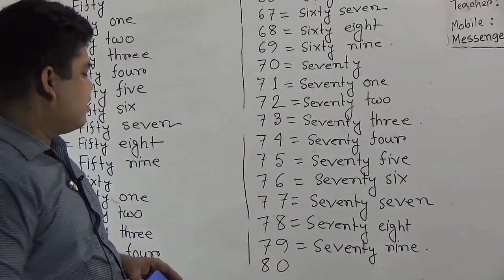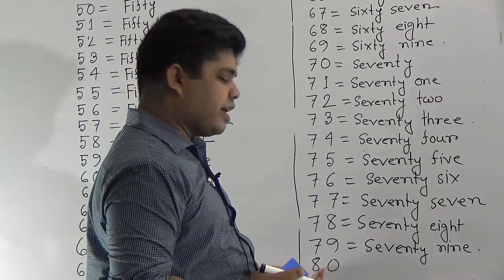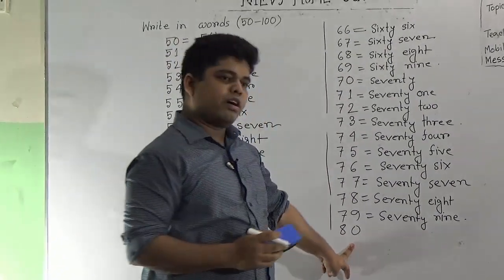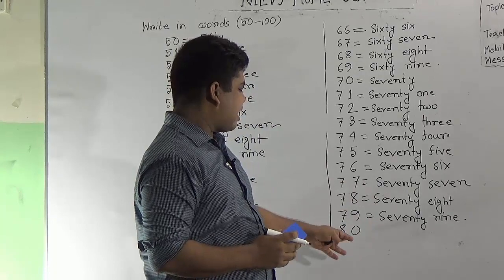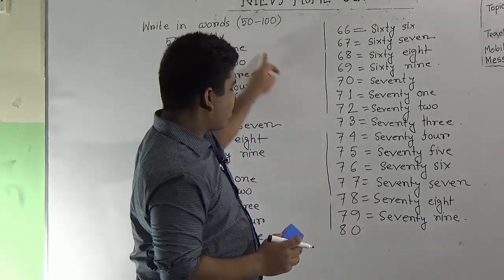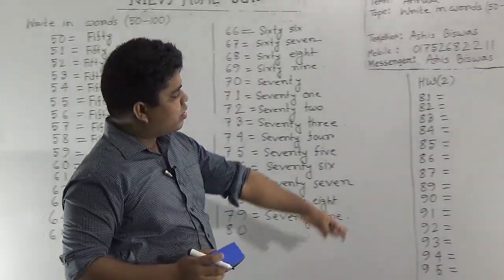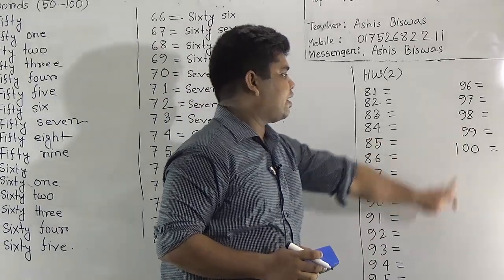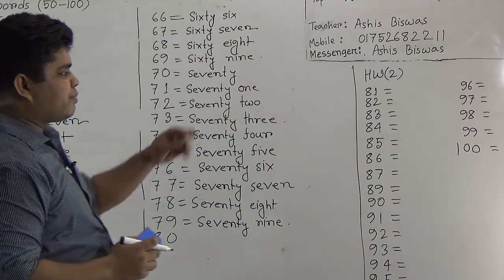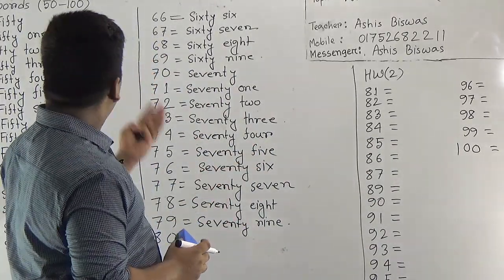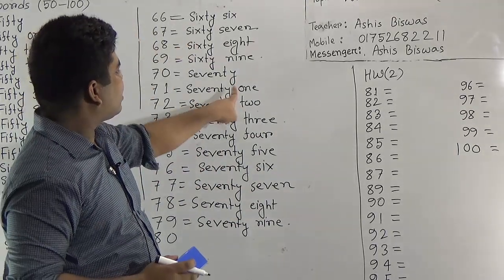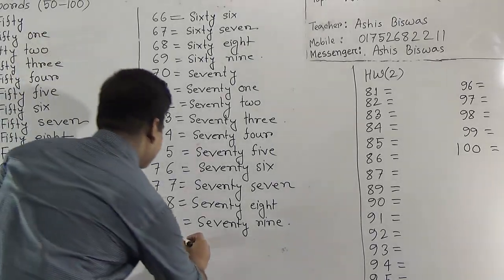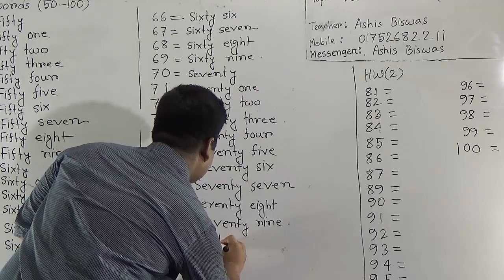Now we shall learn the numbers 80 to 89. My dear students, same as before — you need to know the spelling of 80, then you can easily write numbers in words from 80 to 89. After that, you know the spelling of 90, then you can write the numbers from 90 to 99. And at last, you must know the spelling of 100. The spelling of 100 is H-U-N-D-R-E-D. Now we write the last class number, which is 80: E-I-G-H-T-Y.